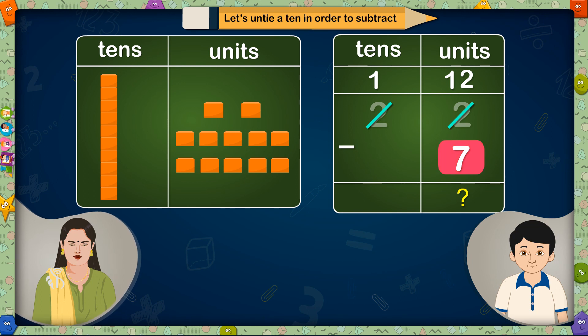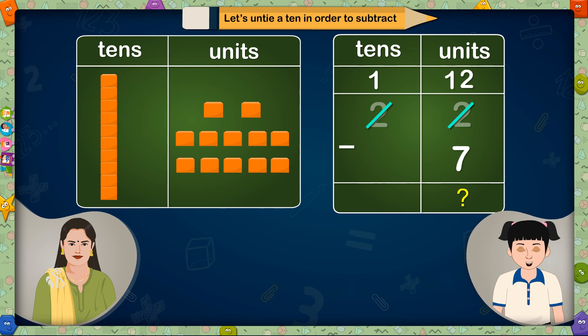Very good! Can we reduce 7 units from these 12 units? Yes madam! 5 units will remain after reducing 7 units from 12 units. That's right! And only 1 ten is remaining in tens place. We will write it as it is in the answer. So 22-7 is equal to 15.